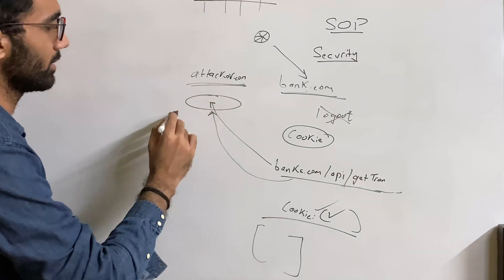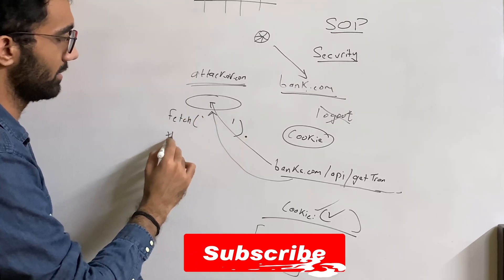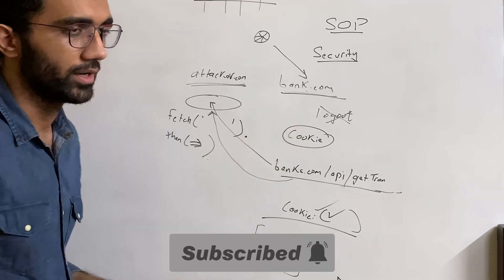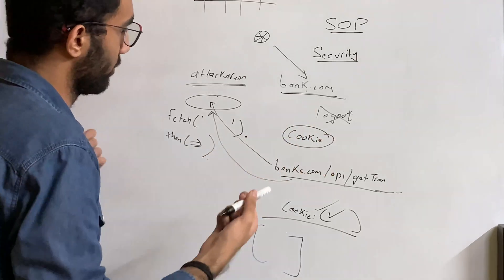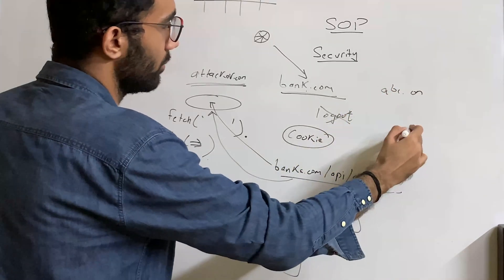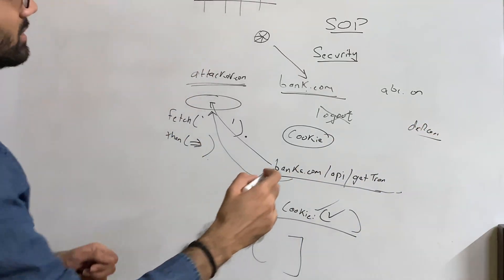Now remember this code right here running on attacker.com can do malicious stuff. It can just fetch and then send it to its own server. It can do it—your bank won't do it hopefully, but it can, and it's bad. So could any other site: abc.com or def.com, whatever.